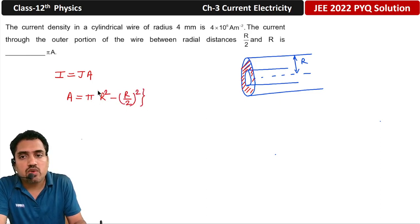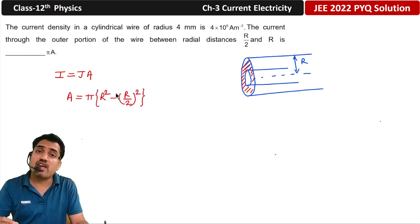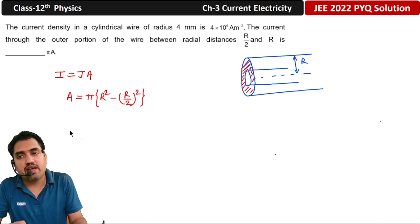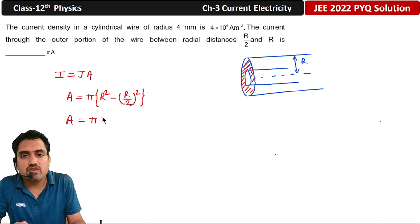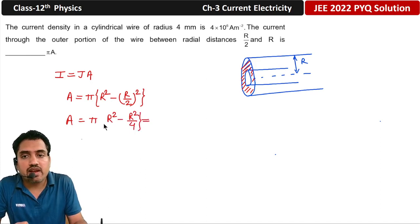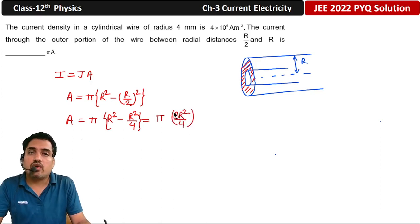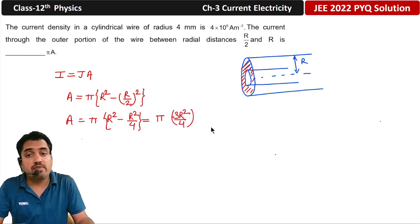The shaded area A equals π times R² minus π times (R/2)², which gives us π into R² minus R²/4. So A = π × 3R²/4, that is 3πR²/4.